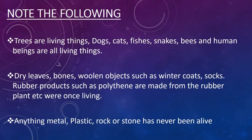Rubber products — we get them from rubber plants. All these objects were once living. In the third point, anything metal, plastic, rock, or stone has never been alive.